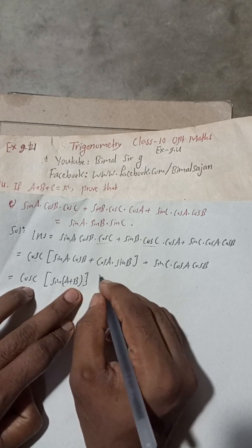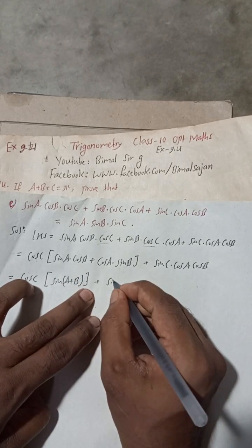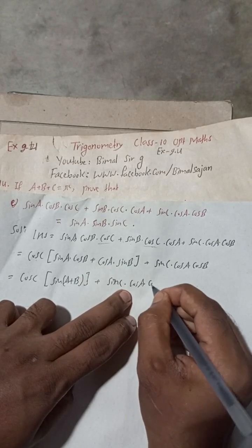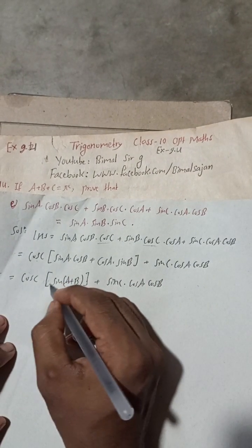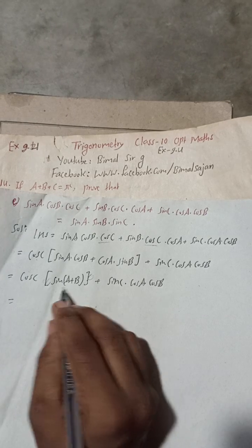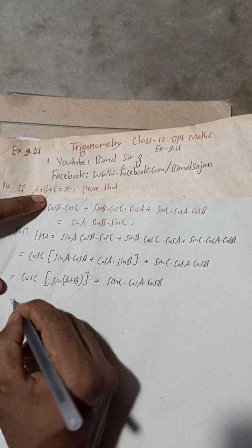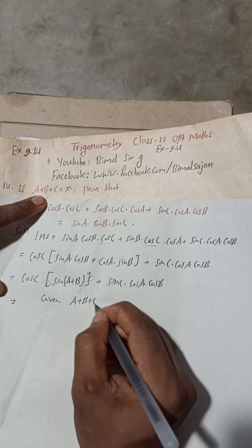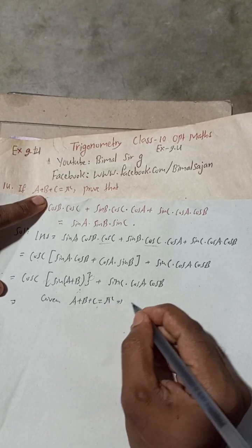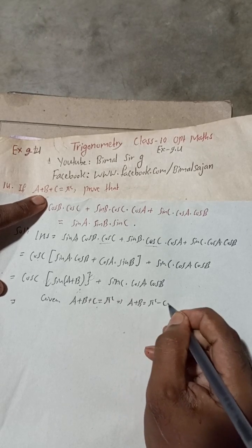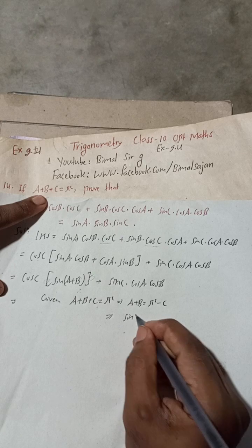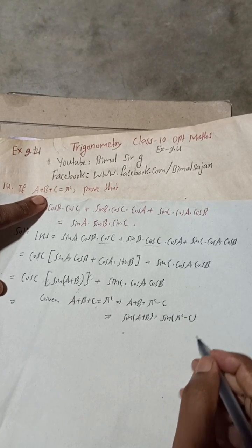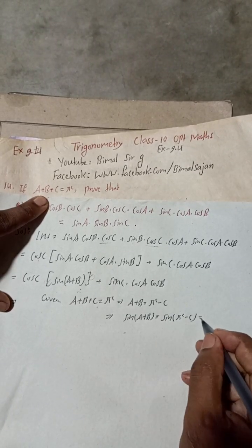So we have sine(A+B), and then plus sine C into cos A cos B. Now we can take help of the given condition: A plus B plus C equals pi radian. This implies A plus B equals pi minus C. Taking sine on both sides, sine(A+B) equals sine(pi minus C), which equals sine C.